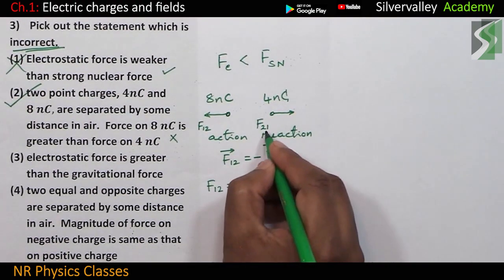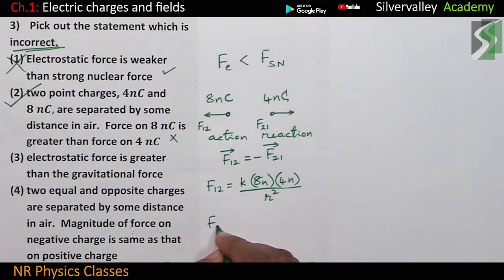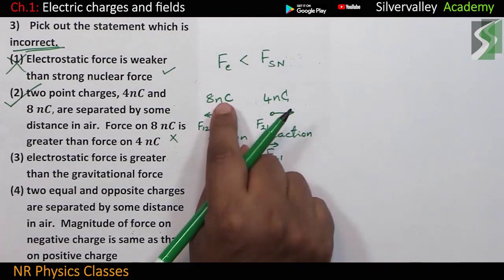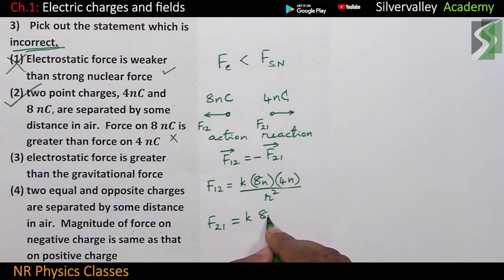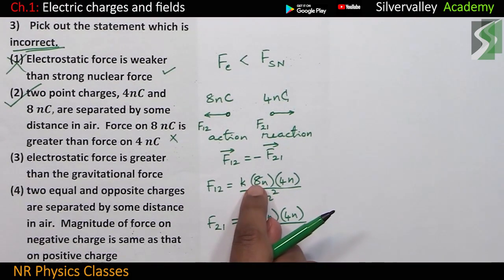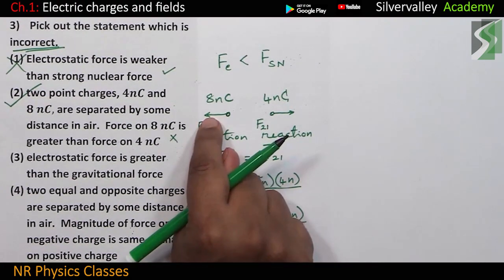Now, let me find force on second charge due to first charge. Constant, product of the charges, 8 nano, 4 nano by R square. Observe their magnitudes. They are equal, but directions are opposite.